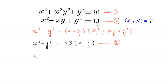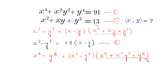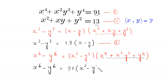Now we use the algebraic identity x to the power 6 minus y to the power 6 is equal to x squared minus y squared times x to the power 4 plus x squared y squared plus y to the power 4. We replace x to the power 4 plus x squared y squared plus y to the power 4 with 91 from equation 1, so this becomes x to the power 6 minus y to the power 6 is equal to 91 times x squared minus y squared. Let us call this equation 4.